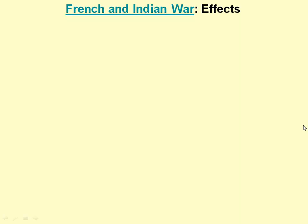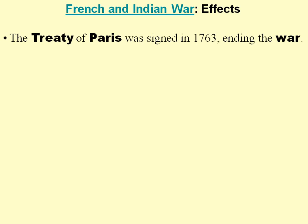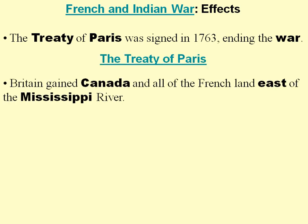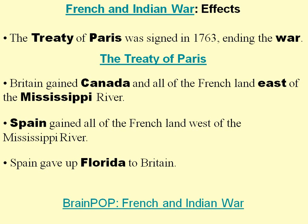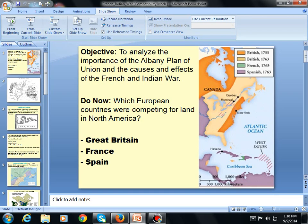Britain wins the war. The Treaty of Paris was signed in 1763, ending the war. Britain gained Canada and all the French land east of the Mississippi River. Spain gained all of the French land west of the Mississippi River, while Spain gave up Florida to Britain. France got the raw end of the deal — losing a lot of land — while Britain gained a great deal of territory. This will lead up to major events with the colonies.